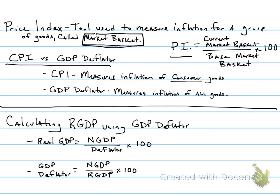As consumers, the CPI is the price index tool we would use most often because it measures the inflation rate for the group of goods that we specifically buy. The GDP deflator is a price index that measures the inflation of all goods — really all goods that are calculated in the GDP. Using the GDP deflator to find the inflation rate gives you the inflation rate for a much larger group of goods than what we actually buy as consumers, which is why we don't use it to measure inflation very often.